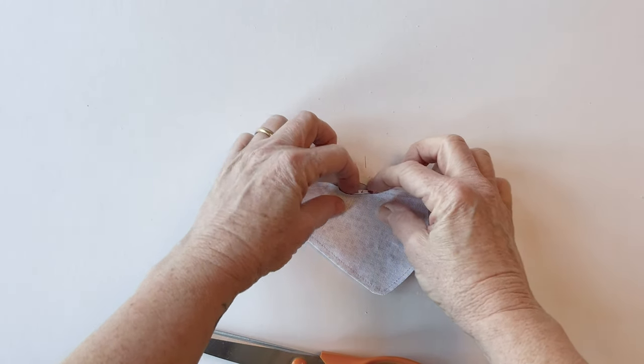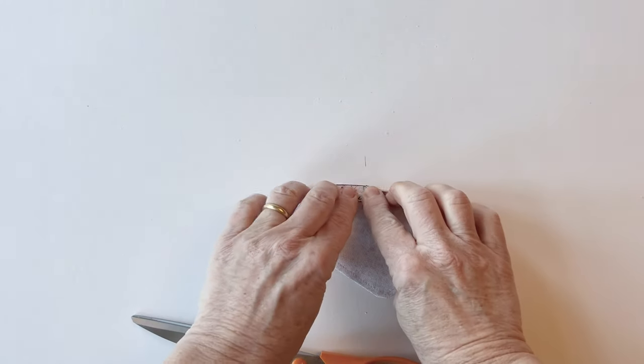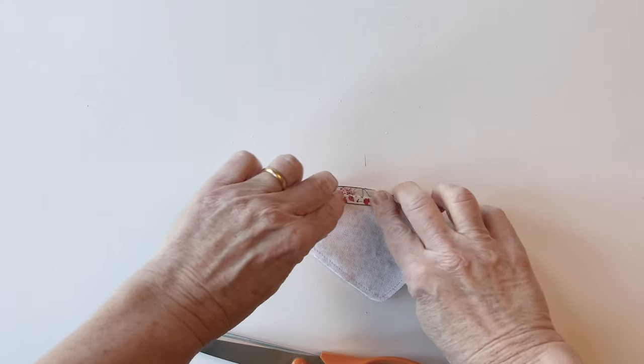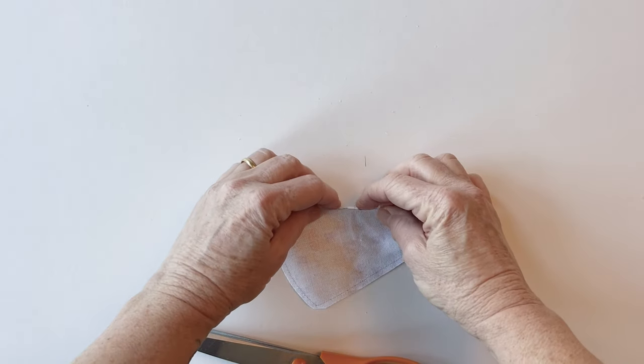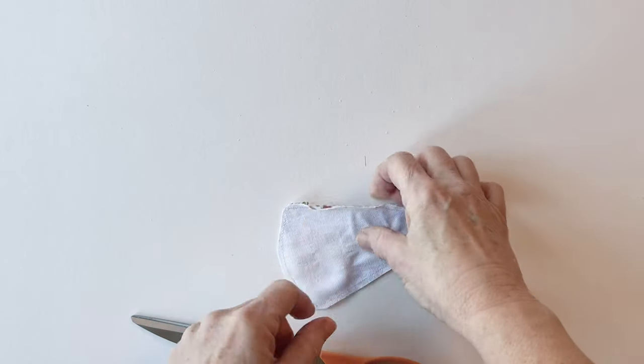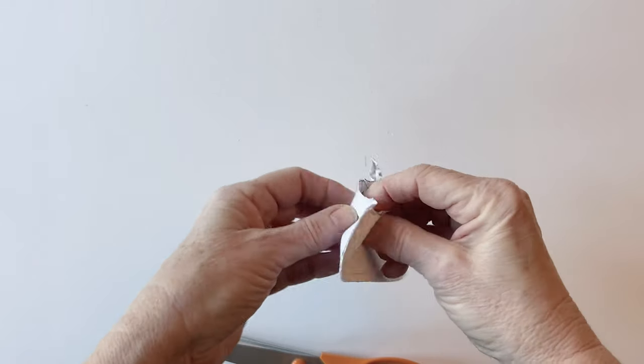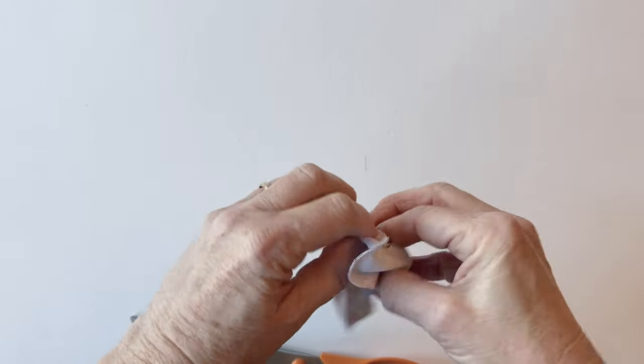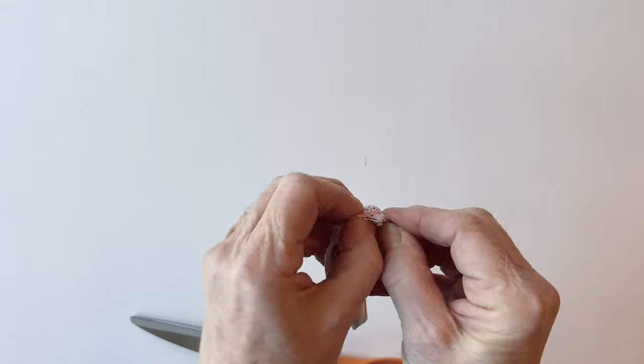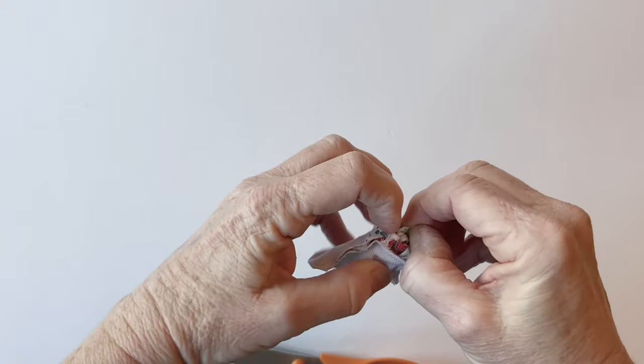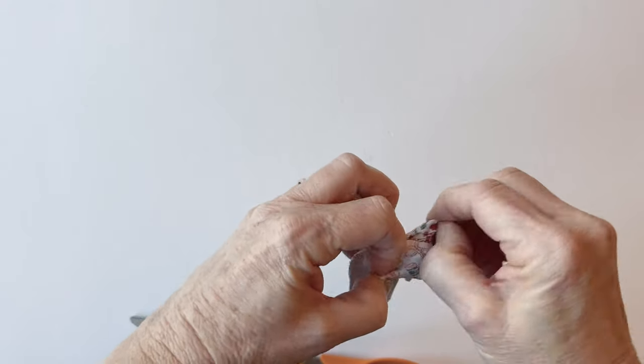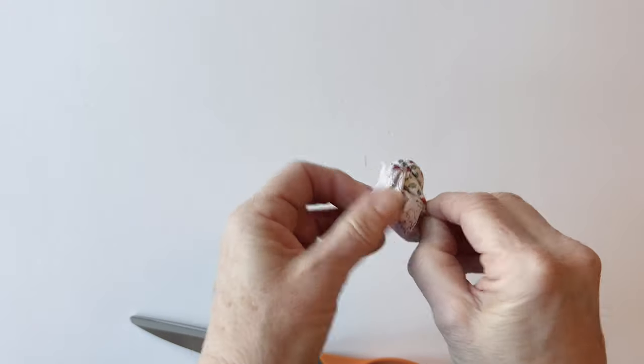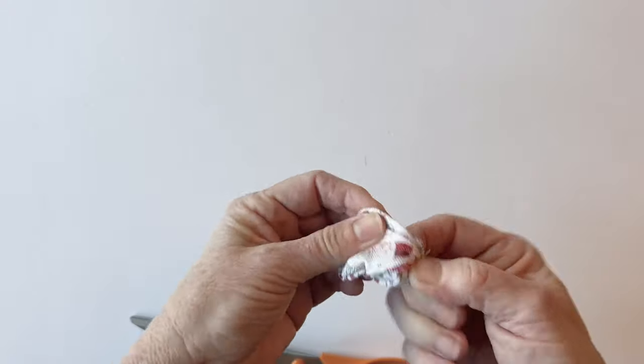To help the edges stay under when you sew it together later, fold and press the edges of the turning gap under to the wrong side. Then you can turn the whole thing right sides out. Very slowly and carefully, pull the whole scissor case out through the turning gap. It will go through, but it's quite a small gap, so ease it through gradually.